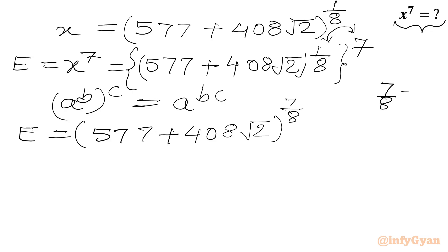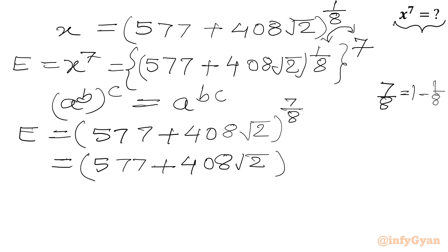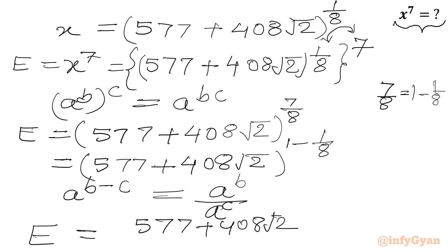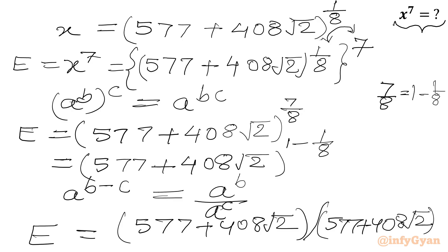Now 7 over 8 we can write as 1 minus 1 over 8. So this becomes (577 plus 408 root 2) to the power (1 minus 1 over 8). We know that a power (b minus c) can be written as a power b divided by a power c. So expression e equals (577 plus 408 root 2) divided by (577 plus 408 root 2) to the power 1 over 8.